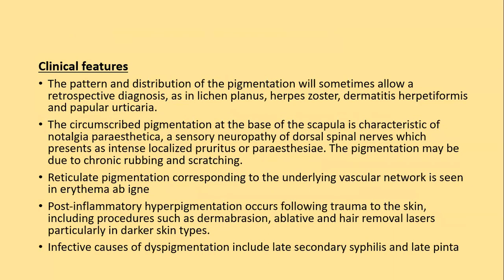The pattern and distribution of post-inflammatory hyperpigmentation sometimes allows retrospective diagnosis — for example, lichen planus, herpes zoster, dermatitis herpetiformis, or papular urticaria. Circumscribed pigmentation at the base of the scapula is characteristic of notalgia paresthetica — a sensory neuropathy of dorsal spinal nerves presenting as intense localized pruritus or paresthesias. The reticulate pigmentation corresponding to the underlying vascular network is seen in erythema ab igne when skin is exposed to direct heat.